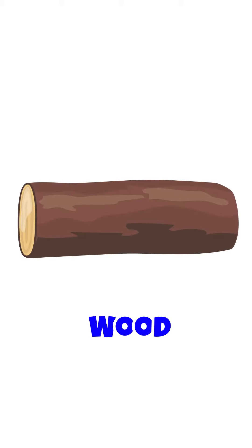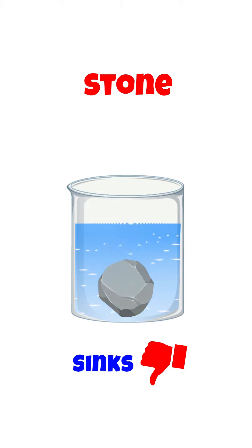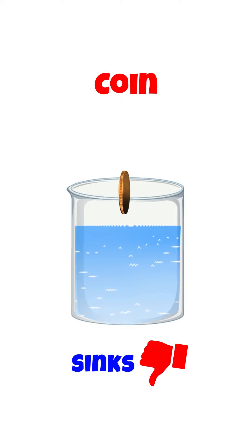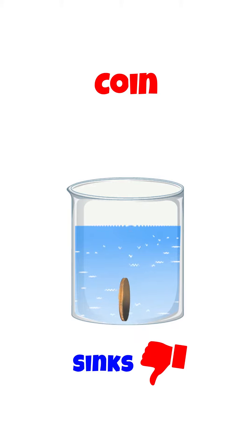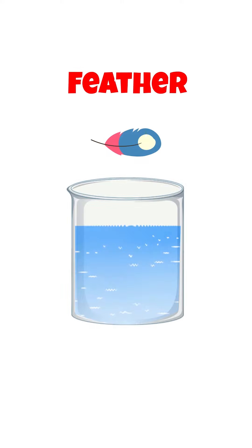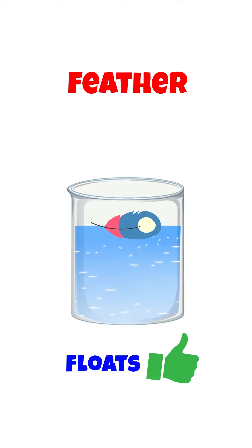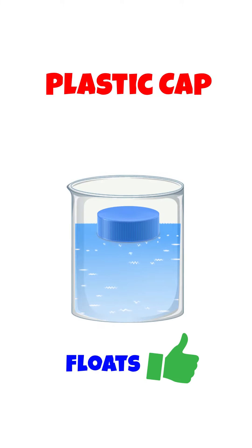Now let's see if your answers are correct. Stone — it sinks, as it is heavier than water. Coin — it sinks, as it is heavier than water. Feather — it floats, as it is lighter than water. Plastic cap — it floats, as it is lighter than water.